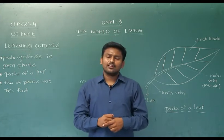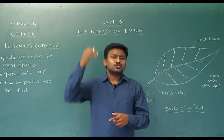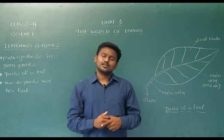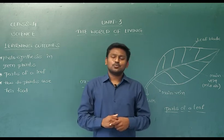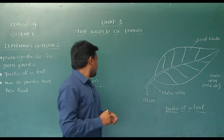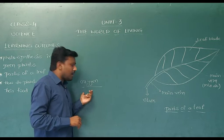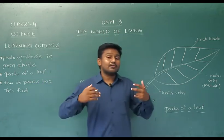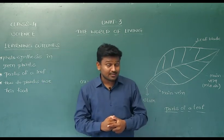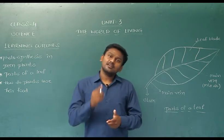We know that we cannot survive even for 2 to 3 minutes without oxygen. Some people they can survive a little more than that, but it is not possible beyond that. So oxygen is very, very important. But how does this oxygen come into our atmosphere? From where? From the plants.